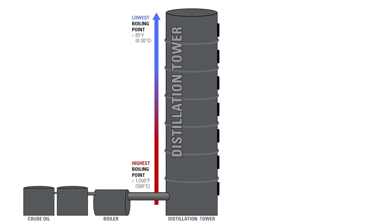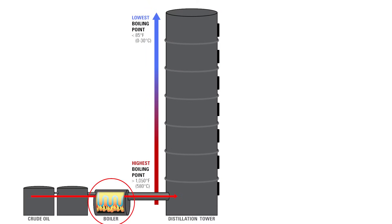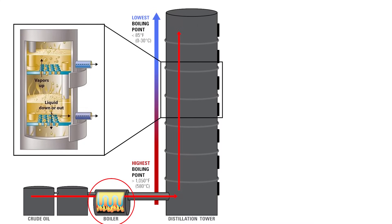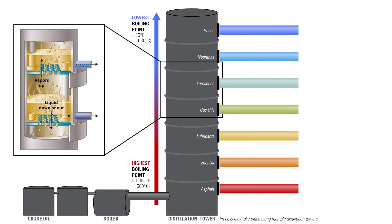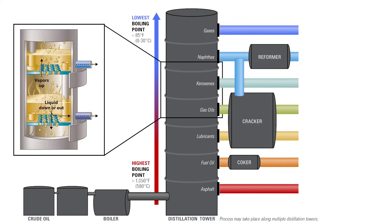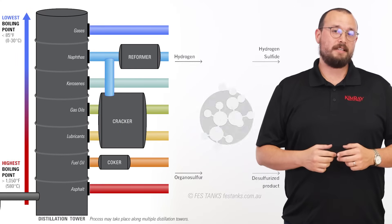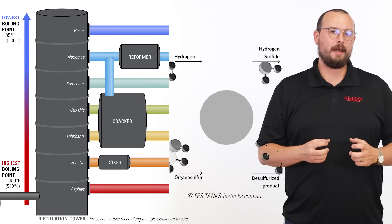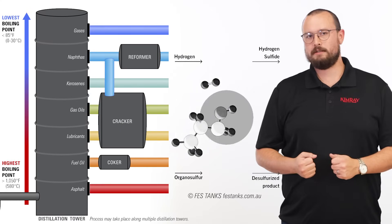During distillation, the oil is heated and separated. This is done in either crude towers or vacuum towers. During conversion, chemicals, catalysts, pressures, and heat are added to the oil in vessels called cokers, hydrocrackers, or fluidized catalytic crackers. This process is used to crack the larger hydrocarbons into smaller ones.